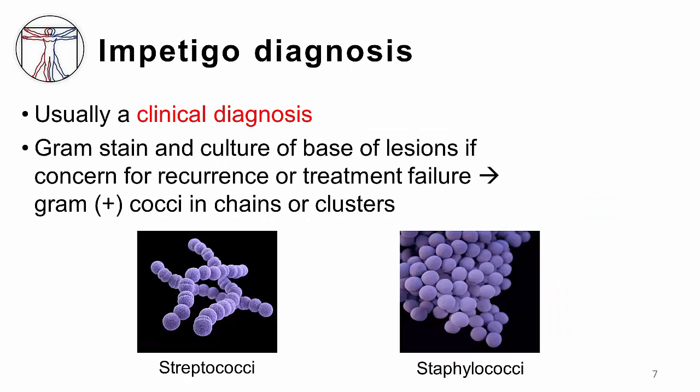Impetigo is usually diagnosed clinically, and treatment decisions are rarely based on the results of culture data. However, testing may be required for recurrent infection, treatment failure, or where there is a large community outbreak and the cause needs to be definitively identified. In this case, a gram stain and culture of the base of the lesions can be useful. Gram stains will typically show gram-positive cocci either in chains, if strep, or in clusters, if staph.